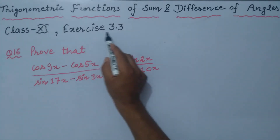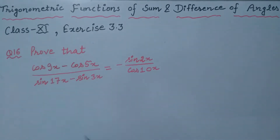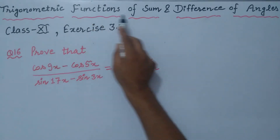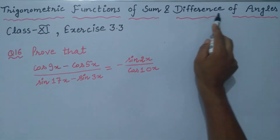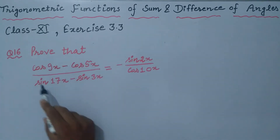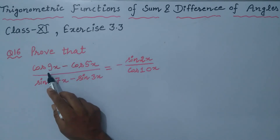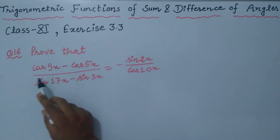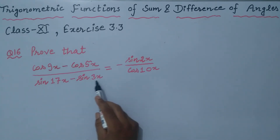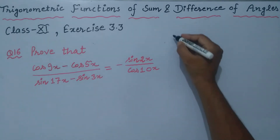Coming to exercise 3.3, question number 16. Our topic is trigonometric functions of sum and difference of angles. We are going to apply the CD formula. Prove that cos 9x minus cos 5x, whole divided by sin 17x minus sin 3x, is equal to minus sin 2x upon cos 10x.